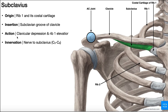The action of the subclavius is clavicular depression — bringing the clavicle down — and rib one elevation, bringing the first rib up. When this muscle contracts, it brings rib one and the clavicle closer together because it spans between the two bones. During active inhalation, when we need to use muscles beyond the intercostals and diaphragm to increase thoracic cavity size, we may recruit the subclavius to bring rib one up closer to the clavicle.